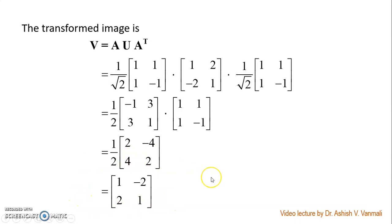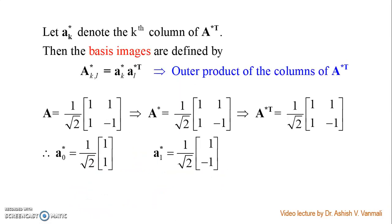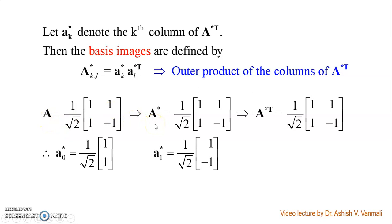So this is our final transform image. Now the second part is to find the basis images. Let A_k conjugate denote the kth column of matrix A conjugate transpose. For the transformation matrix A we need to find A conjugate transpose. The basis images are defined as A_KL conjugate equal to vector A_K conjugate multiplied with vector A_L conjugate transpose — it is the outer product of the columns of A conjugate transpose. In this case, A is the same as A conjugate and also A conjugate transpose. So the first vector A_0 conjugate is the first column with multiplying factor 1/root 2, which is 1 upon root 2 times [1, -1].